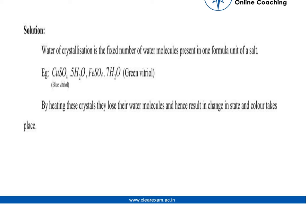In one formula unit of a salt. And our examples would be CuSO₄·5H₂O, FeSO₄·7H₂O which is green vitriol. Remember these colors also, it will help you out. By heating these crystals they lose their water molecules and hence result in change in state and color takes place.